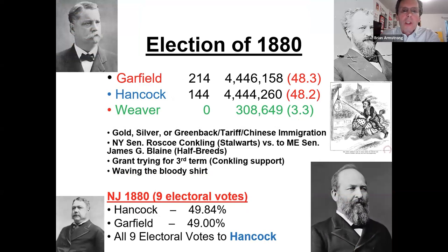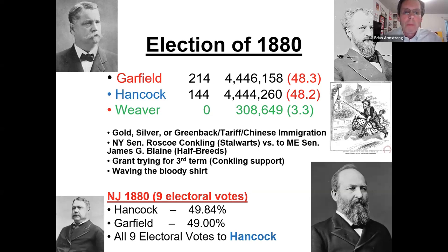The election of 1880 was another close one — 48% to 48%. From 1876 up to 1896, these elections are extremely close. Garfield squeaked out a victory against Hancock. There was a lot of party boss involvement: Roscoe Conkling with the Stalwarts versus Maine Senator James Blaine with the Half-Breeds. Grant was also considering a third term — 'Washington wouldn't, Grant couldn't, Roosevelt shouldn't' — the third term being the third rail. They also 'waved the bloody shirt,' saying Democrats were unworthy of being president due to their role in the Civil War. New Jersey voted for Hancock.